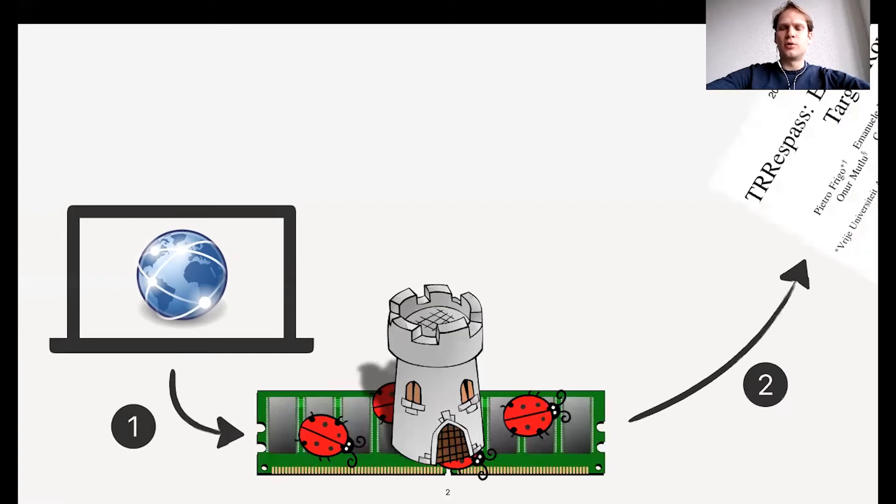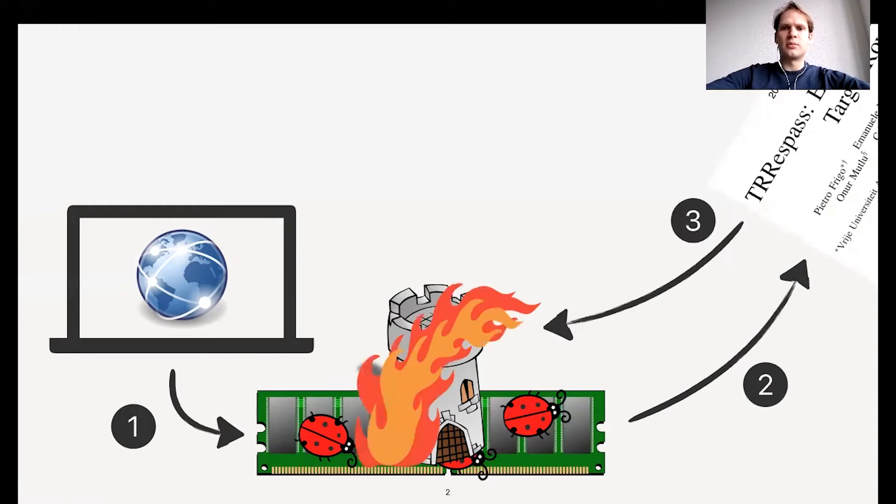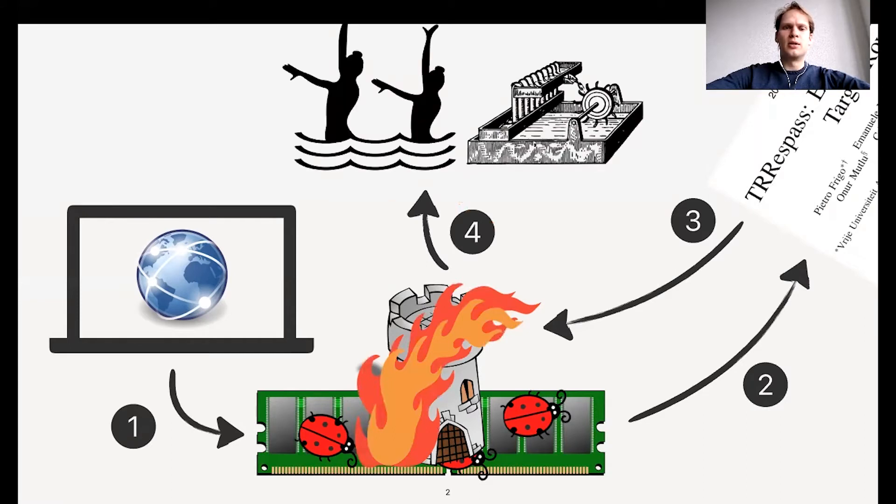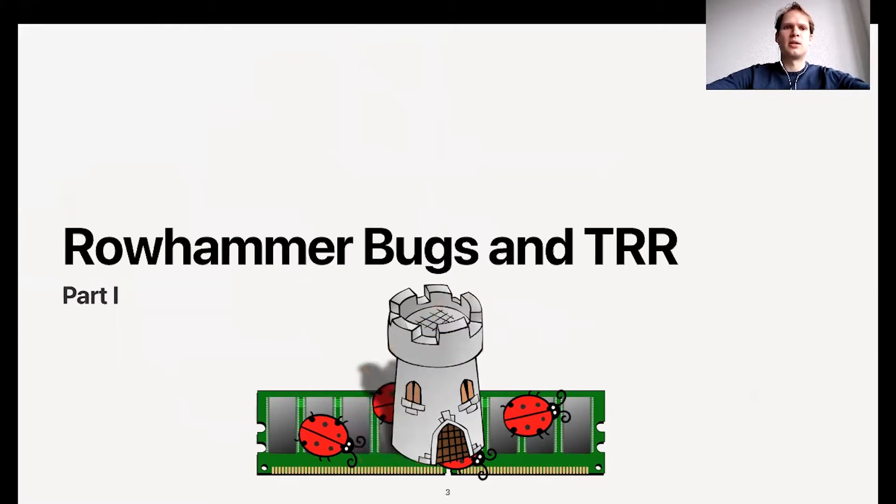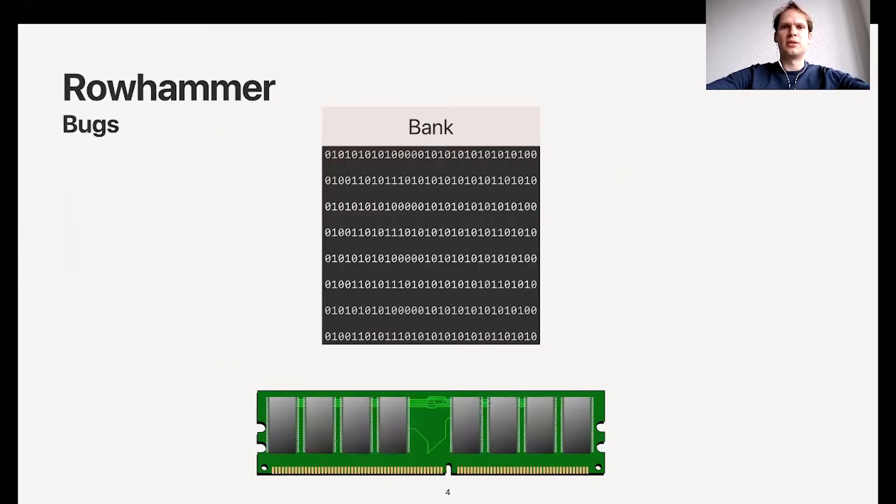But then researchers showed that if you do a more sophisticated Rowhammer attack, you can bypass this mitigation, so the mitigation is flawed. Today I will present to you a new attack, SMASH, which through synchronization and self-evicting access patterns is able to create these complicated Rowhammer patterns that Trespass came up with from inside your browser. Therefore, browser users are also threatened.